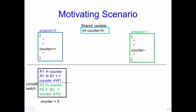Suppose there is a context switch — the same thing happens for program 1. The value of counter (now 6) is loaded into R2. R2 is decremented by 1, so R2 becomes 5. Then R2 is stored back into the memory location of counter. Therefore, at the end of these two programs executing, the value of counter is 5.